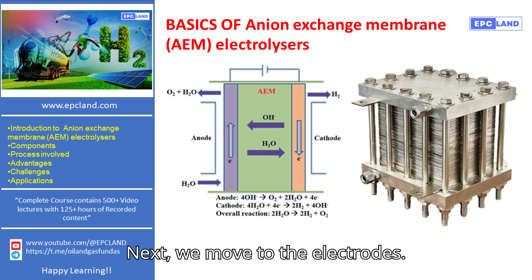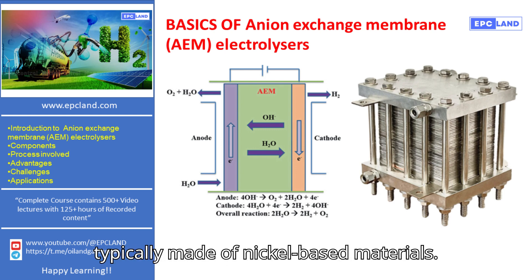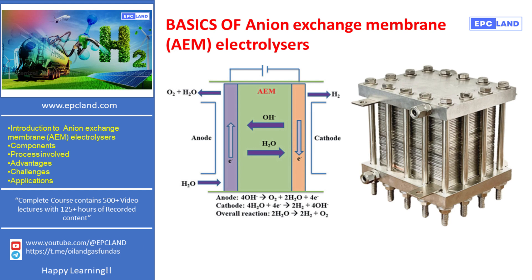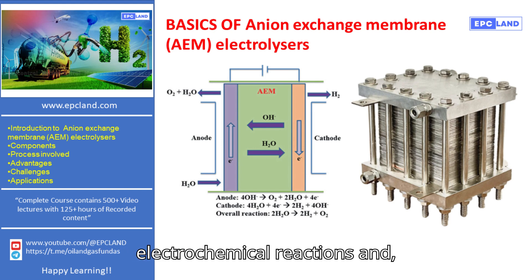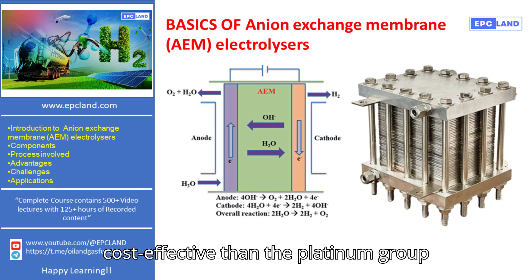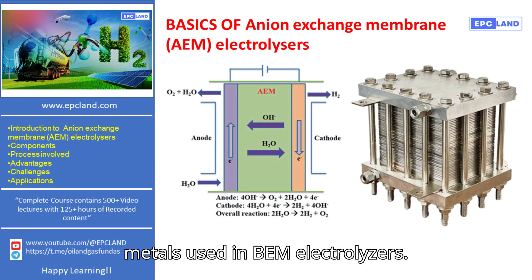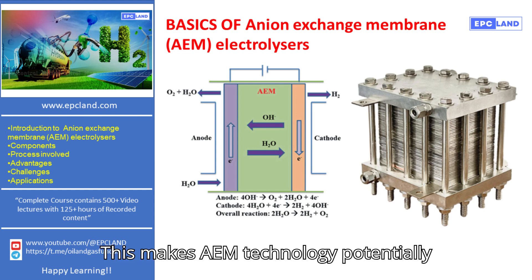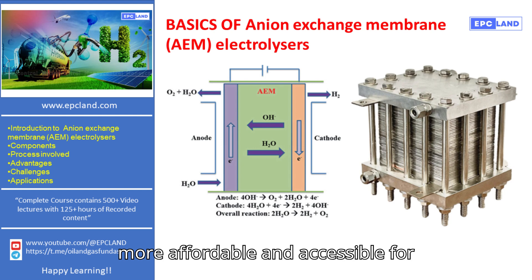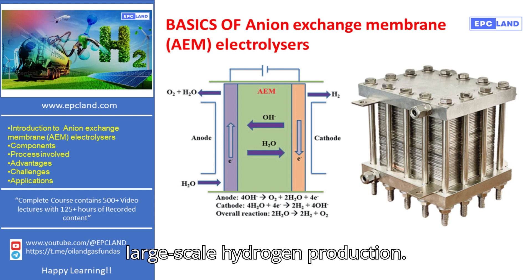Next, we move to the electrodes. In AEM electrolyzers, the electrodes are typically made of nickel-based materials. These materials are chosen because they are effective catalysts for the electrochemical reactions and, importantly, they are much more cost-effective than the platinum group metals used in PEM electrolyzers. This makes AEM technology potentially more affordable and accessible for large-scale hydrogen production.